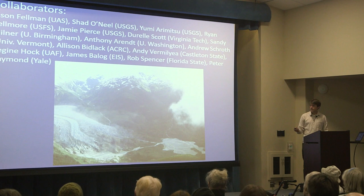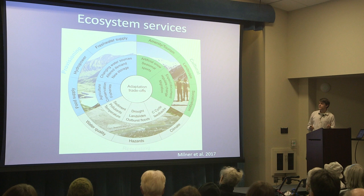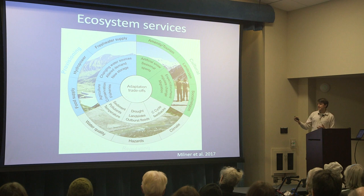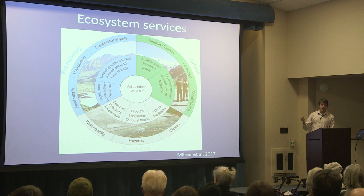I'd like to start with a diagram that a group of us came up with recently that looks at what are the ecosystem services that glaciers provide. We can categorize these in a number of areas: provisions, which would be things like food supply in terms of fisheries and supporting agriculture; cultural amenities such as tourism and recreation; and then regulating ecosystems, which would include things like water quality, outburst floods, and hazards.